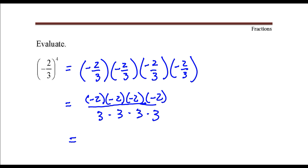So let's do the multiplication in the numerator. Negative two times negative two, that's positive four, times negative two, that's negative eight, times negative two, that's positive sixteen.